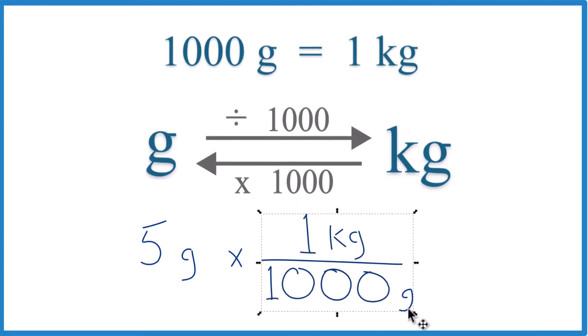We have grams on the bottom. 1,000 grams equals one kilogram. So that's our conversion factor. Then when we multiply, grams cancel out, five times one kilogram, so five kilograms divided by 1,000. That gives us that 0.005 kilogram number we got before.